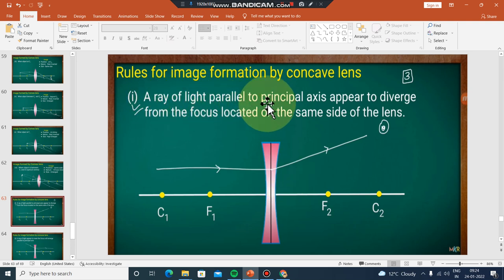A ray of light parallel to the principal axis appears to diverge from the focus. It diverges from an imaginary focus located on the same side of the lens.